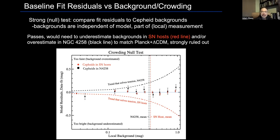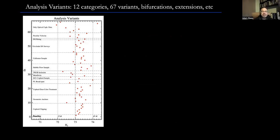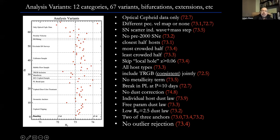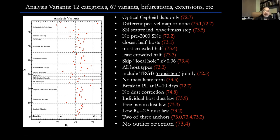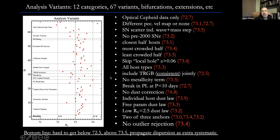In the paper, we go through 67 variants of the fundamental analysis, including bifurcations of the data and extensions — different ways of removing outliers, different geometric anchors, ways of relating color to dust, the use of metallicity to refine standardization of Cepheid variables, and which sets of supernovae we use. The bottom line is it's very difficult to get below about 72.5 or much above 73.5. The additional scatter from systematic variance is propagated as additional error in our measurements.